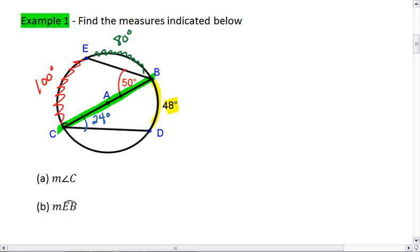So we found now that the measure of angle C is 24 degrees, and the measure of arc EB is 80 degrees. And those are our two answers.